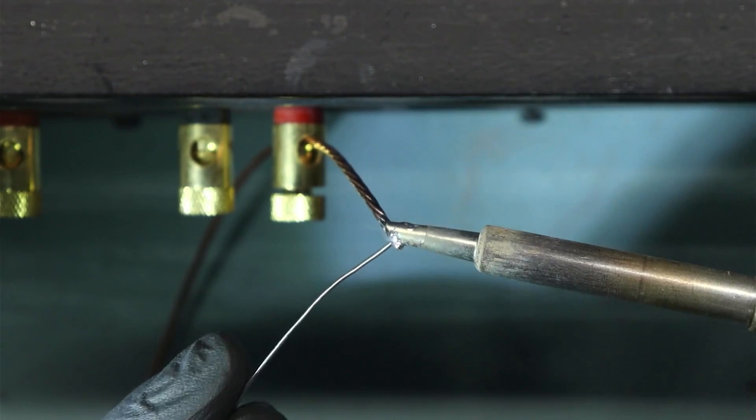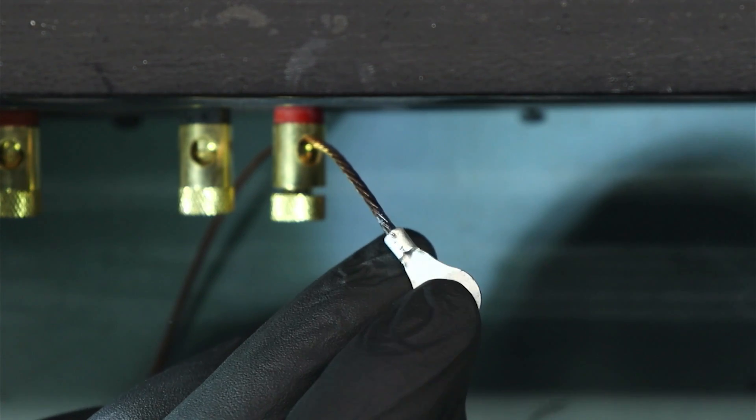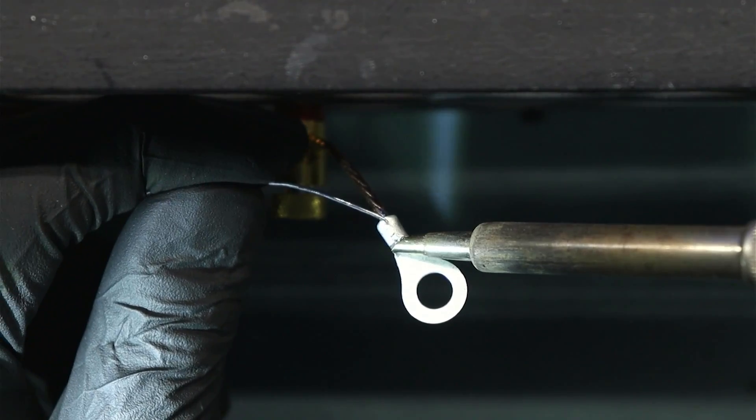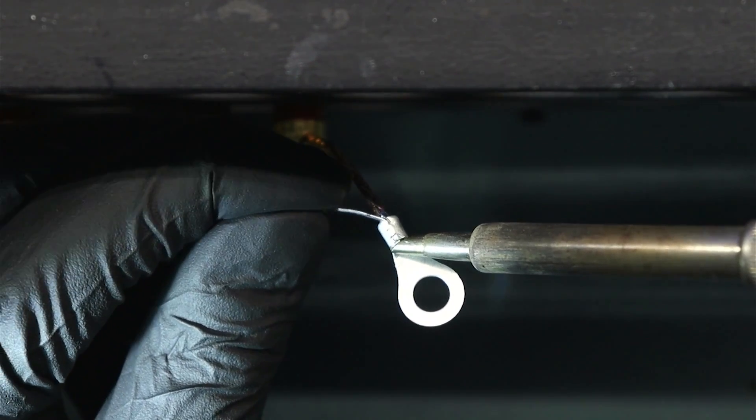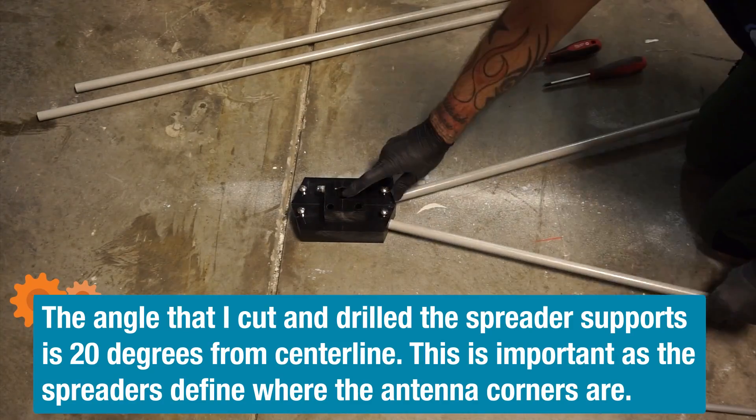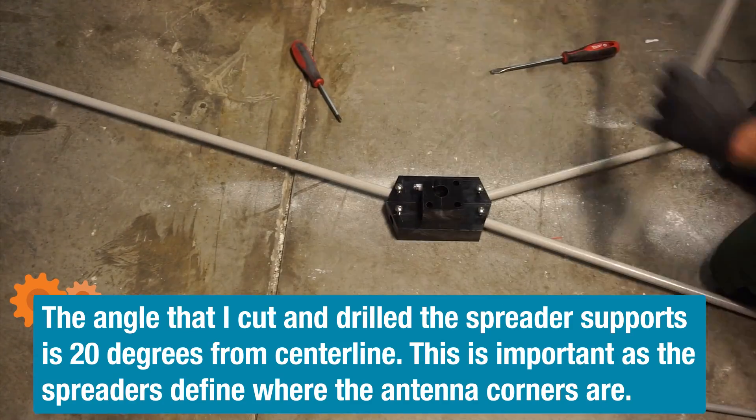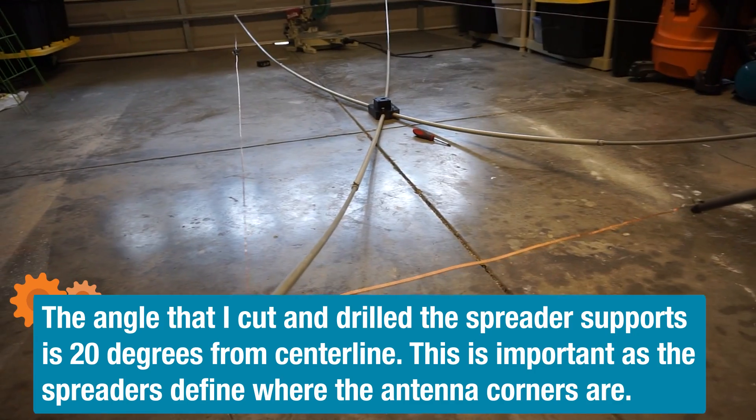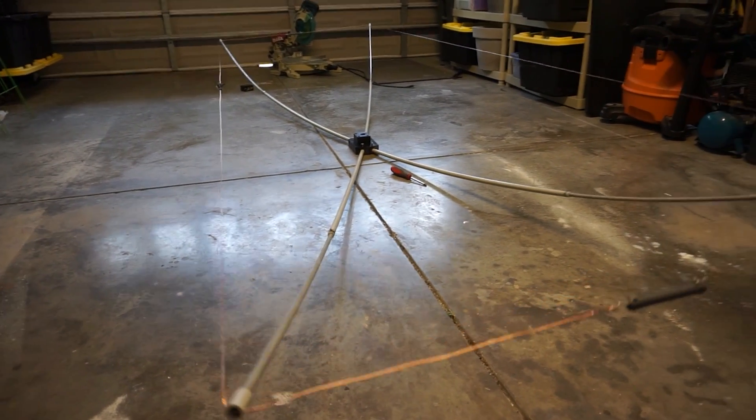The connector you see there is called a budwig connector and these things are great for moxon antennas or simple wire dipoles. After that I soldered some terminals on the ends of each section of wire. This makes it easy to connect to the insulators especially out in the field. The last step in the antenna building process was to just put everything together so here I am attaching the spreaders to the hub and then after stringing it up this is the final product.